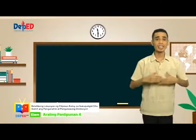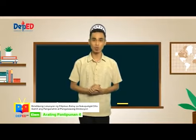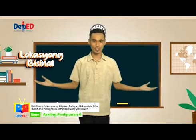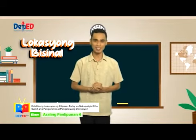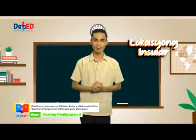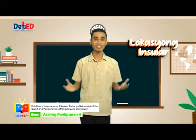Ang relatibong lokasyon o kaugnay na kinalalagyan ng bansa ay ang direksyon o lokasyon ng isang lugar batay sa kinalalagyan ng mga katabi o kalapit nitong lugar. May dalawang paraan sa pagtukoy ng relatibong lokasyon ng isang bansa: ito ay ang lokasyong bisinal at lokasyong insular. Sa lokasyong bisinal, natutukoy ang lokasyon ng isang bansa sa pamamagitan ng mga bansang katabi o hangganan nito. Samantalang sa lokasyong insular, natutukoy ang lokasyon ng isang bansa sa pamamagitan ng mga anyong tubig na nakapaligid dito.